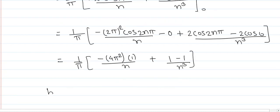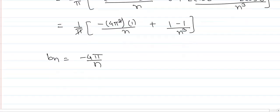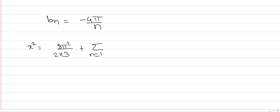Now substitute the values of a₀, aₙ, and bₙ into the Fourier series. We get the required Fourier series as: x² = (a₀/2) + summation, which is 8π²/3 divided by 2, plus summation from 1 to infinity of aₙ cos nx + bₙ sin nx. The value of a₀/2 = 4π²/3.